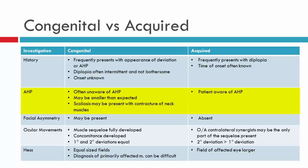The abnormal head posture may be smaller than expected in congenital patients. This comes back to the fact that their fusion ranges are often larger, and therefore their area of BSV is larger, meaning the abnormal head posture can be smaller. With a constant abnormal head posture, facial asymmetry may develop. So a patient who's had a congenital incomitant strabismus and adopted an abnormal head posture could develop some facial asymmetry. When it's acquired, generally this doesn't happen.